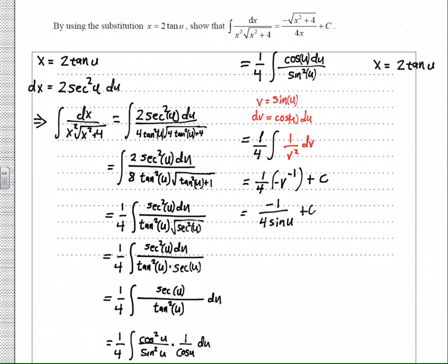So here's what we know. x is equal to 2 tangent of u. I'm going to solve for tangent of u: tangent of u is equal to x over 2, which informs the right triangle. If I had an angle u, x over 2 would be the tangent of that angle u.